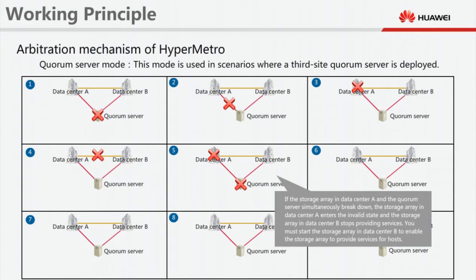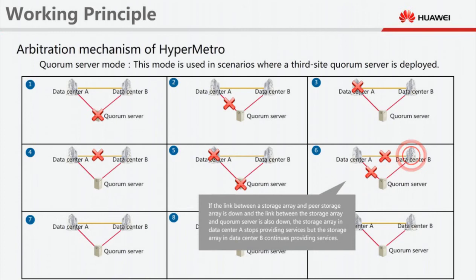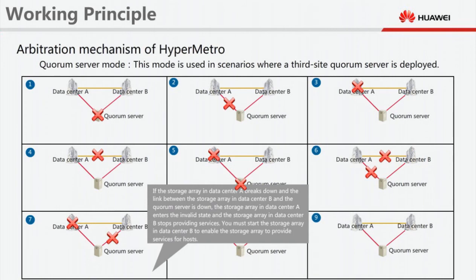If the storage array in data center A and the quorum server simultaneously break down, the storage array in data center A enters the invalid state and the storage array in data center B stops providing services. You must start the storage array in data center B to enable it to provide services for hosts. If the link between a storage array and its peer storage array is down, and the link between that storage array and the quorum server is also down, the storage array in data center A stops providing services, but the storage array in data center B continues providing services.